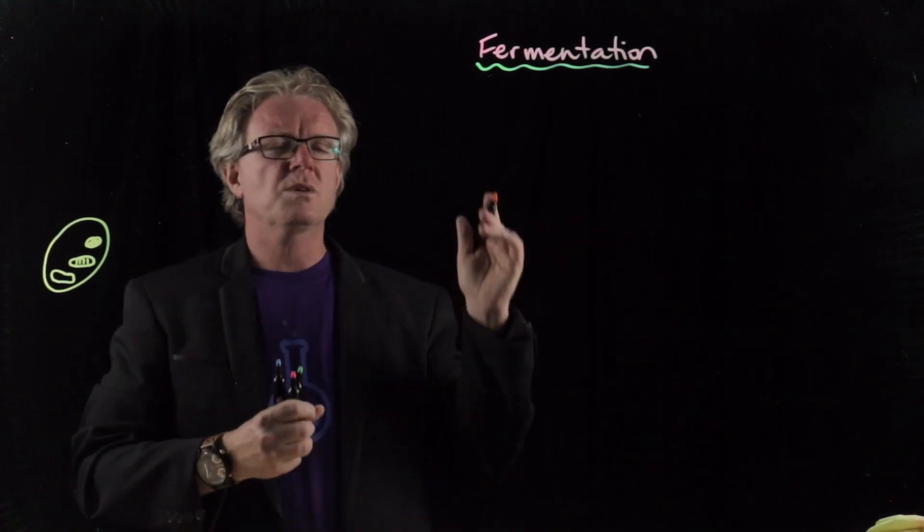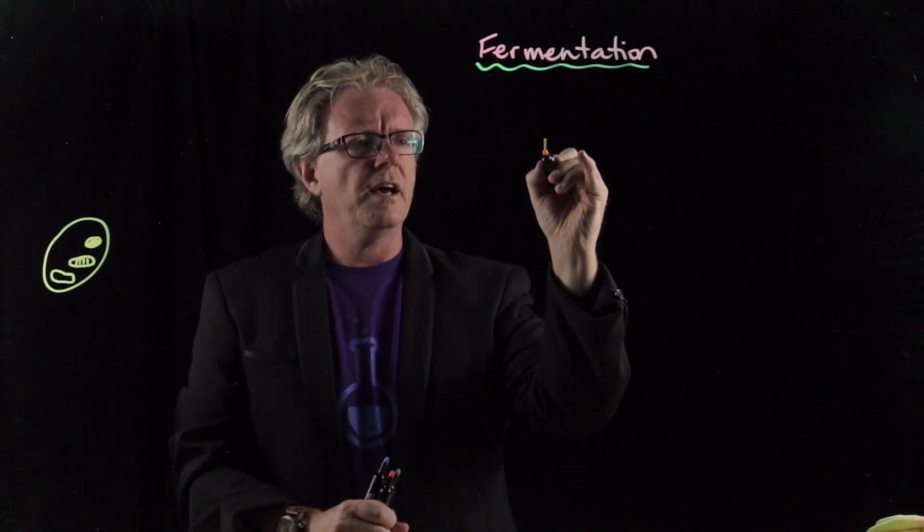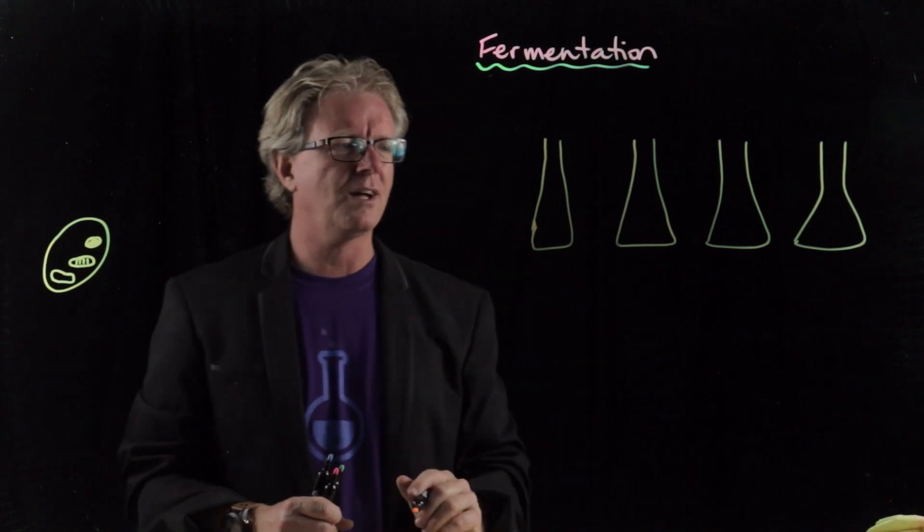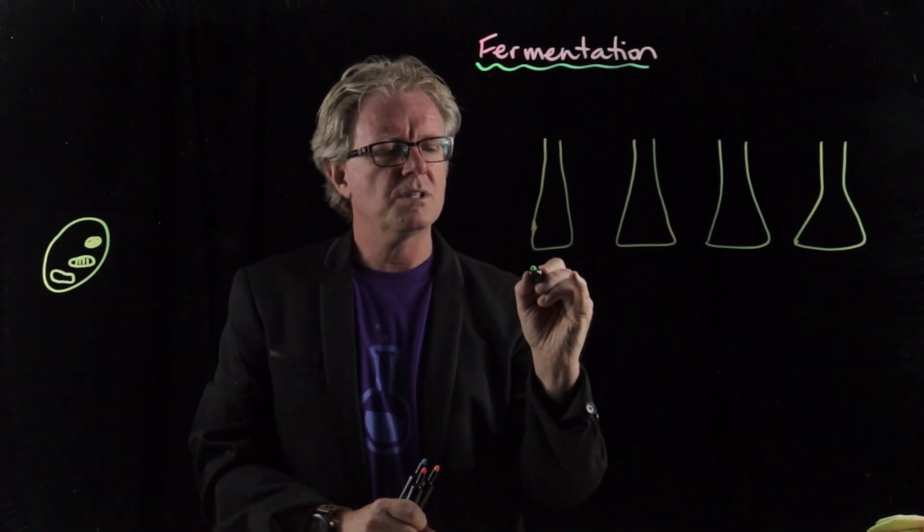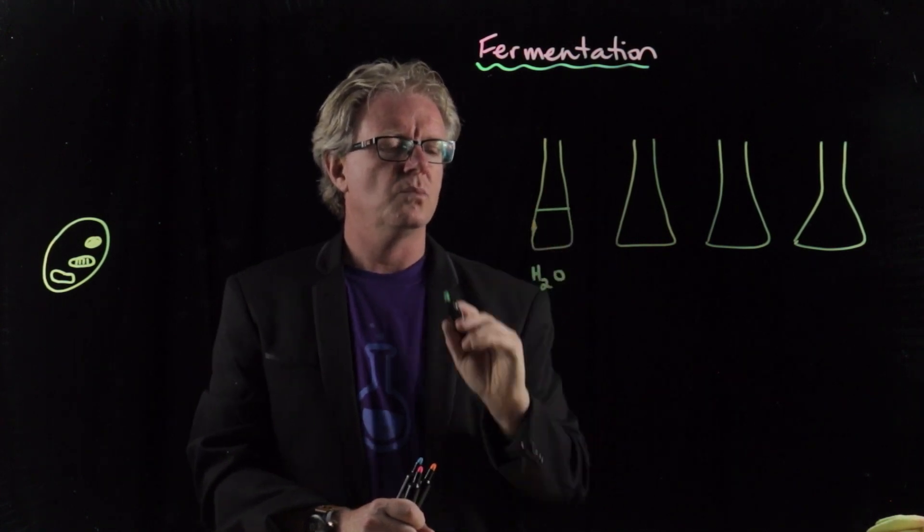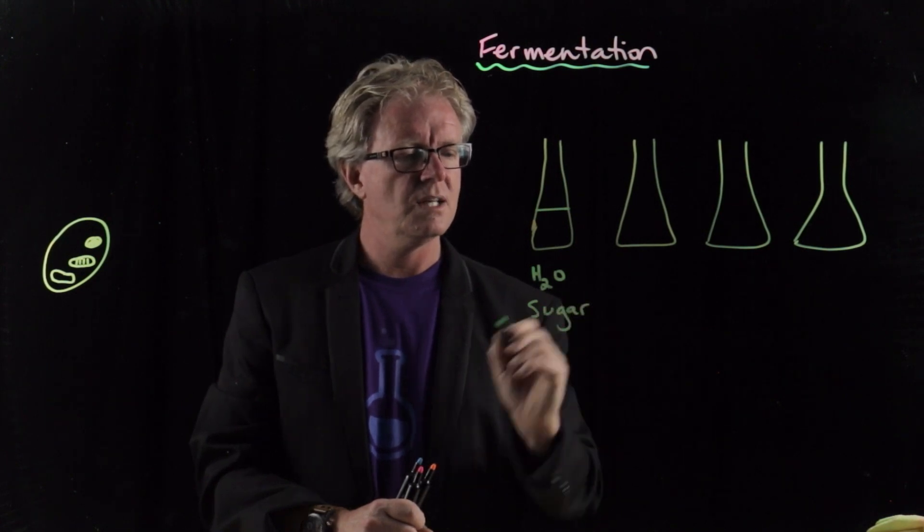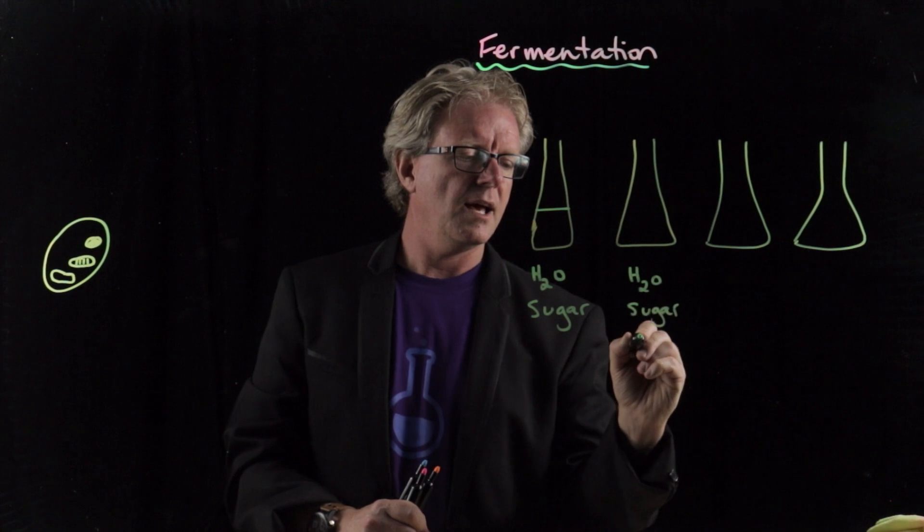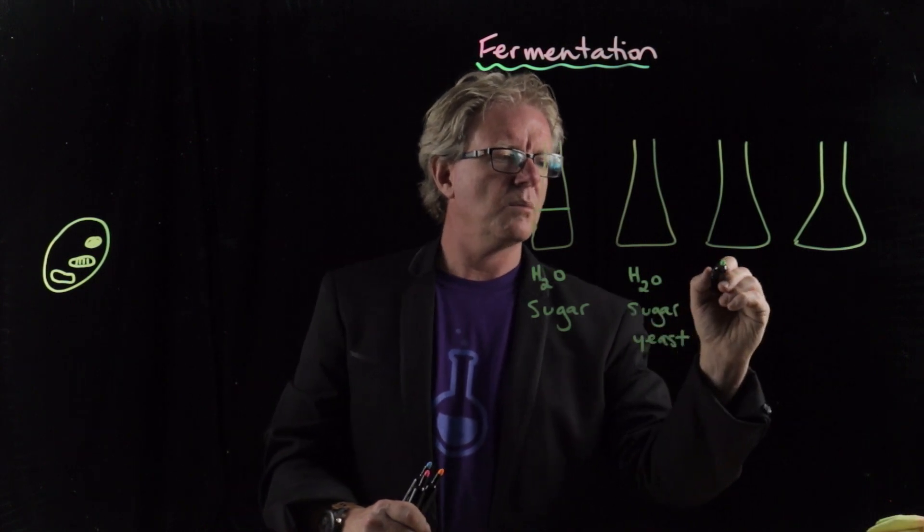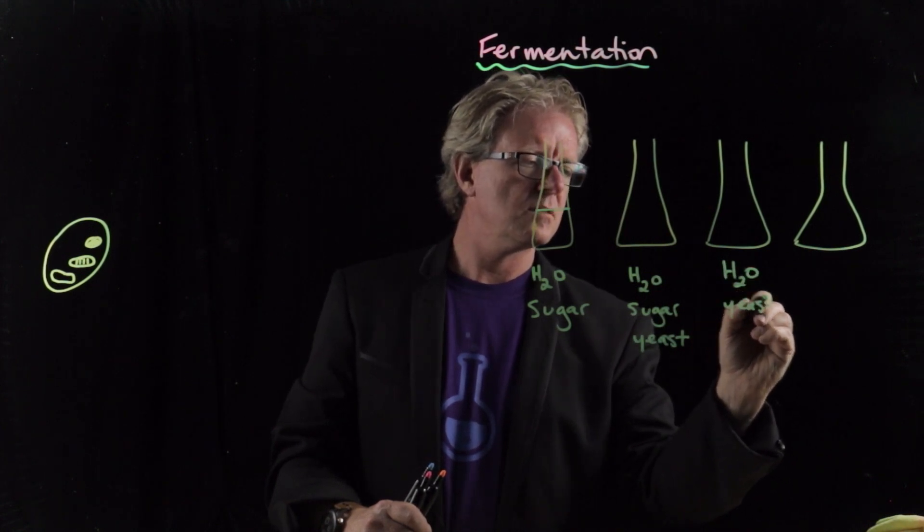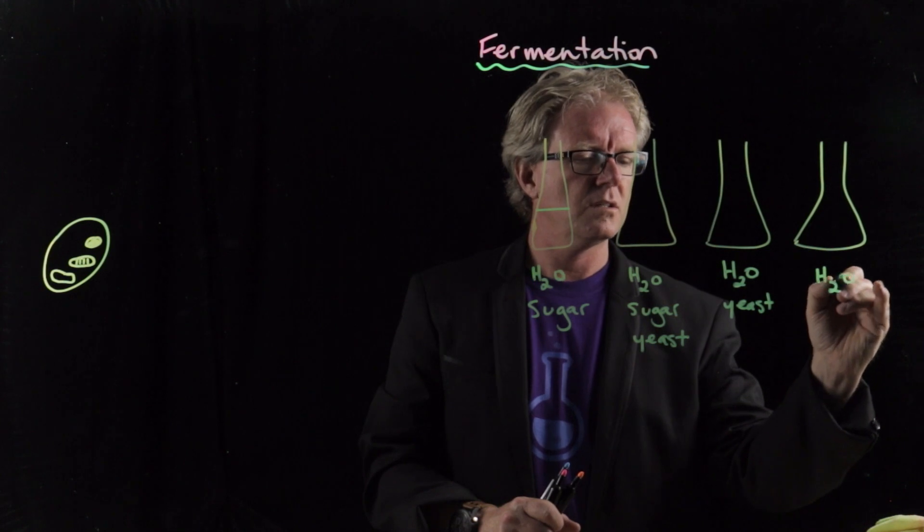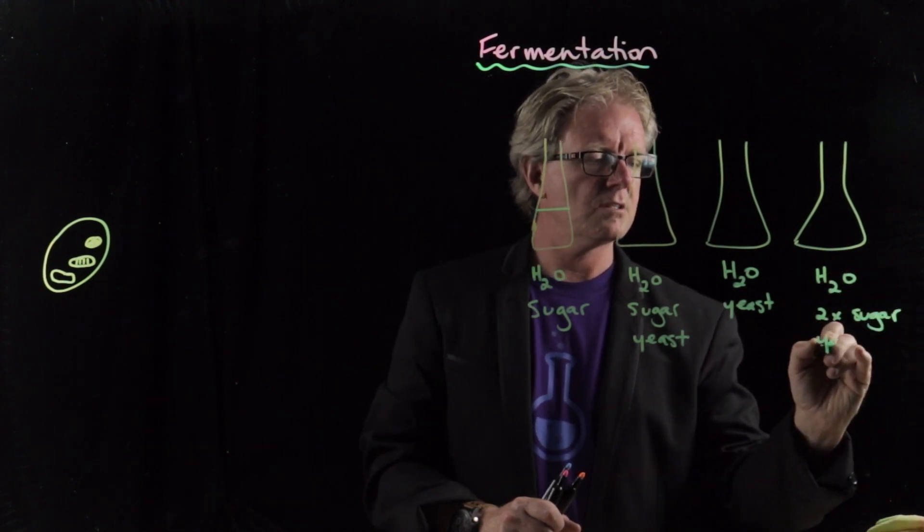So what we're going to do in another video is we're going to set up our experiment. And so what we're going to do is we're going to have some bottles. These are very poorly drawn bottles, I might say. Started with a bottle and ended up with a weird and wacky conical flask. Anyway, so we set up four of them. In the first one here, we're just going to have some water and we'll put some sugar in there as well. In the second one, we're going to add some water, of course, some sugar and some yeast. Then in the next one, we'll just have some water and some yeast. And in the last one, just to add a bit of interest, we'll add double the amount of sugar. Okay, so we'll go water, two times sugar and yeast.